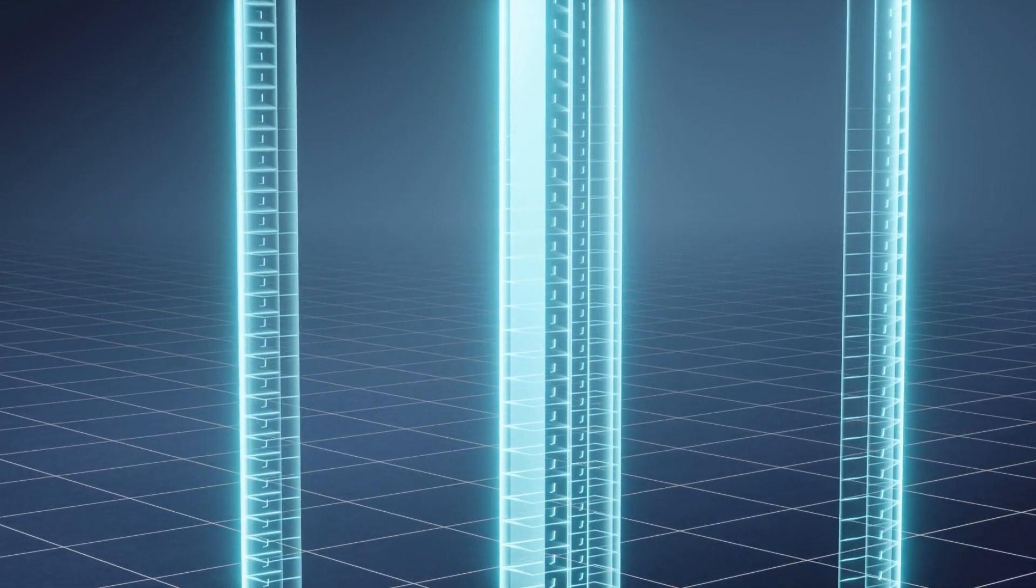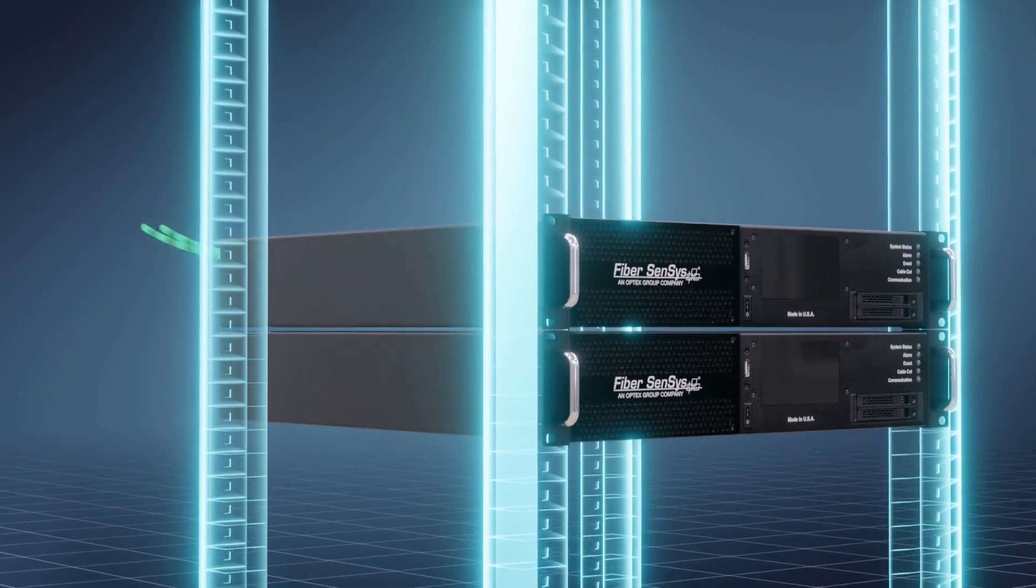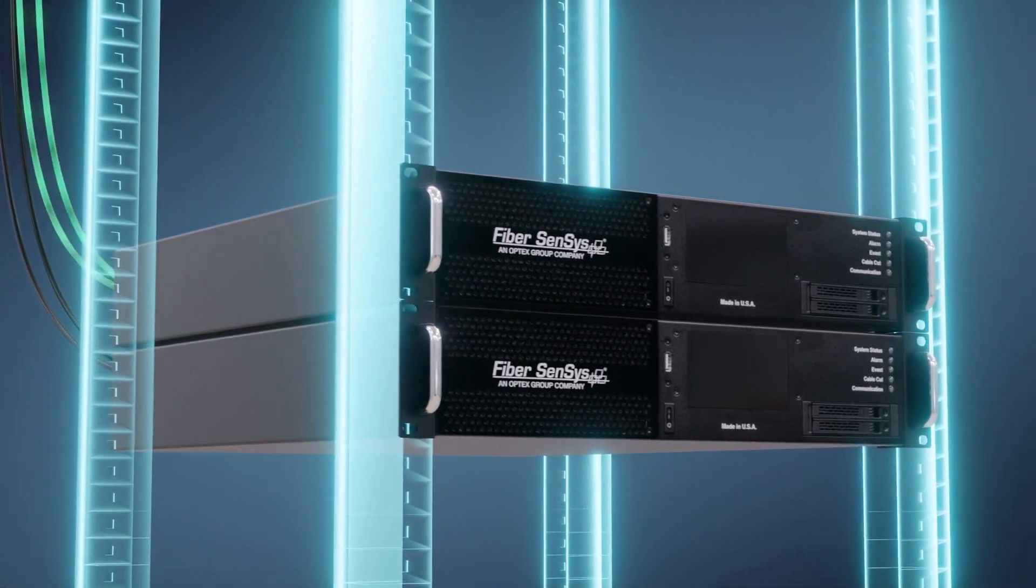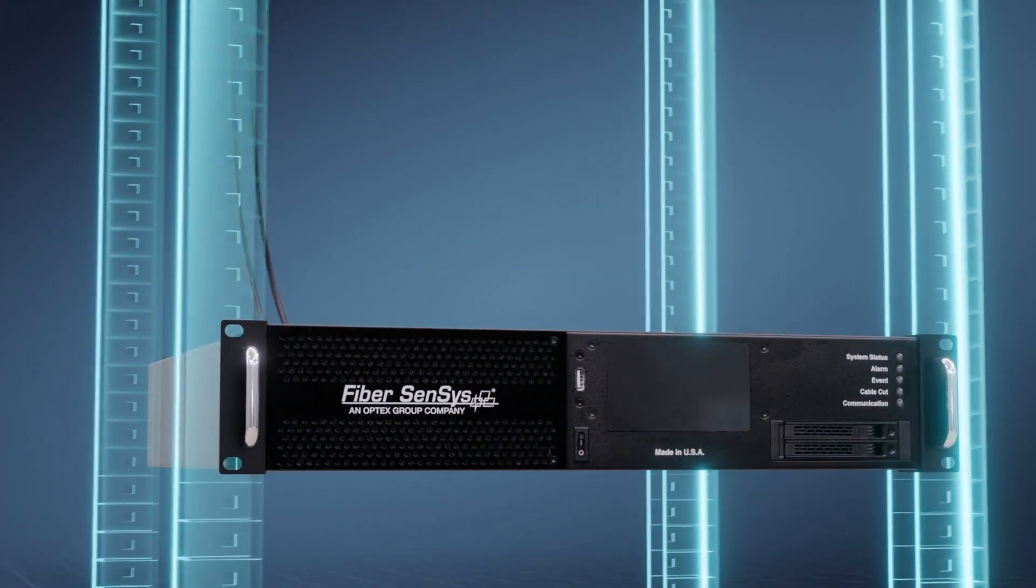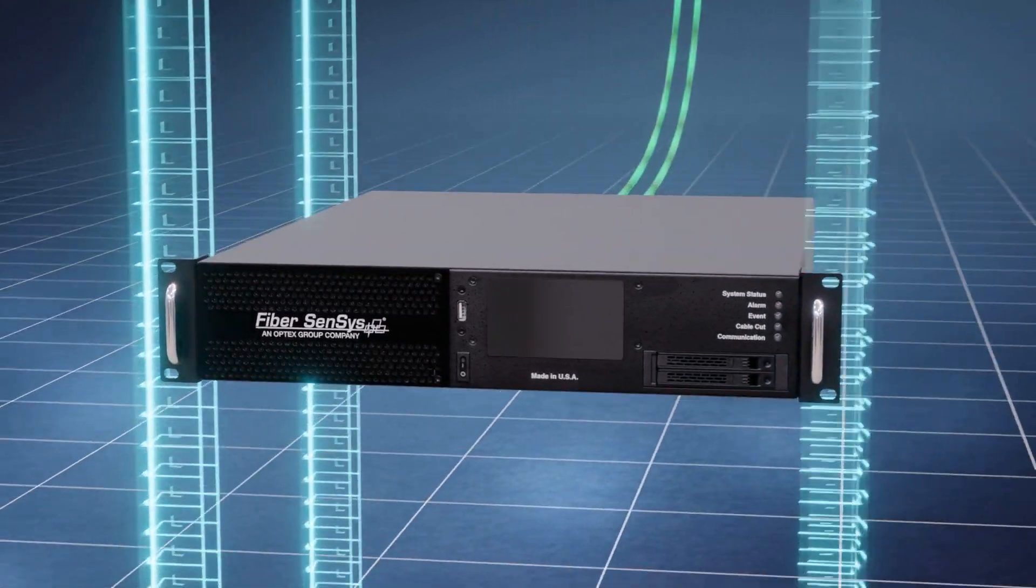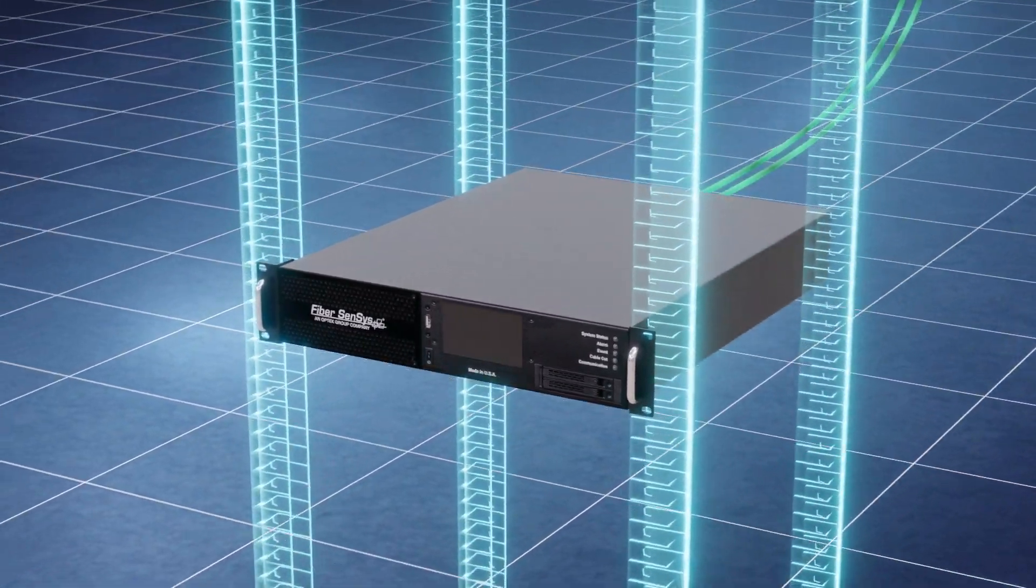EchoPoint systems can provide redundant processing, eliminating a single point of failure. In the unlikely event of a processor failure, the second processor automatically takes over, maintaining your perimeter security system.